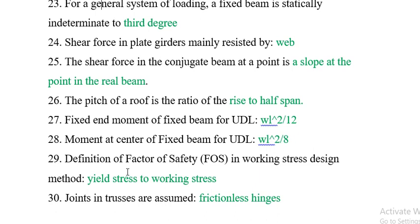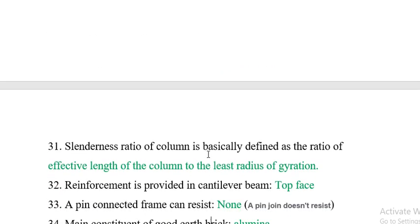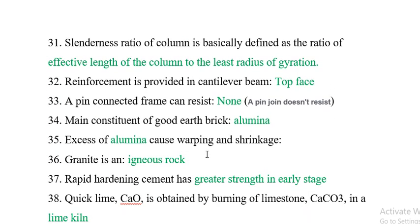Question 29: The definition of the factor of safety in the working stress design method is the ratio of yield stress to working stress. Question 30: The joints in trusses are assumed to be frictionless hinges. Question 31: The slenderness ratio of a column is defined as the ratio of the effective length of the column to the least radius of gyration.